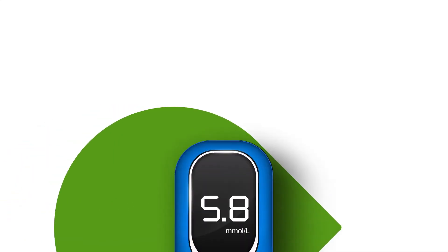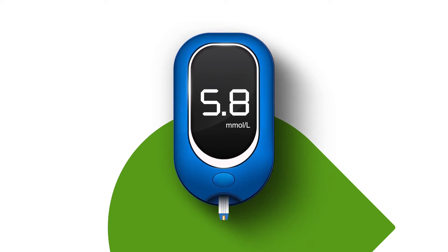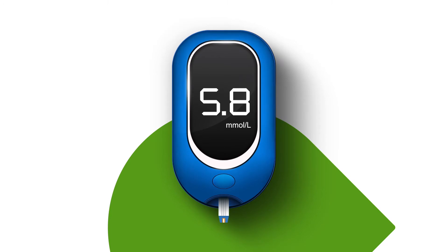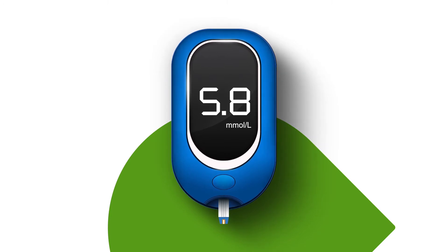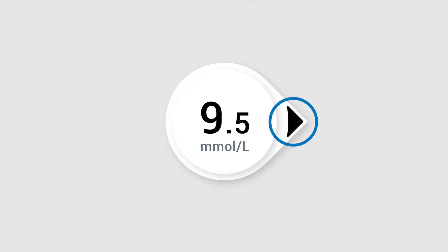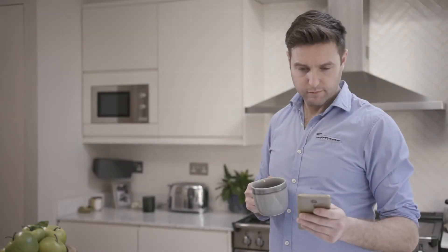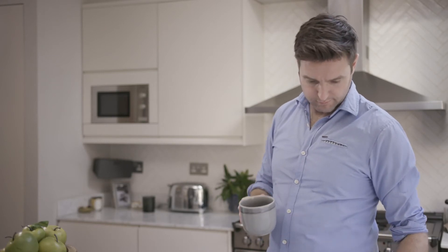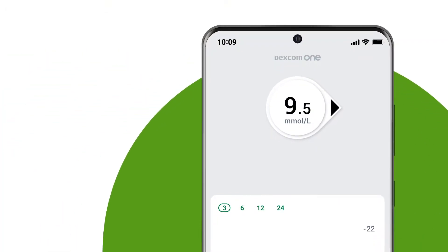However, there are two instances when this isn't the case and you will need to use your meter instead of your sensor reading. The first is when you don't have both your sensor reading and trend arrow — you need both to make a treatment decision. The other time to use your meter is when how you feel doesn't match your sensor reading.